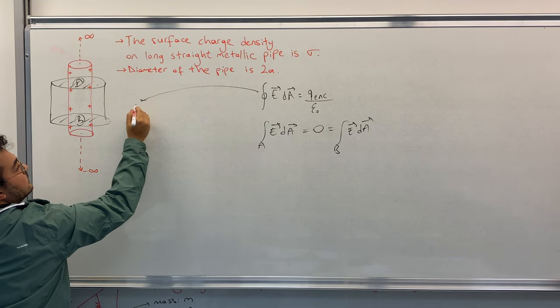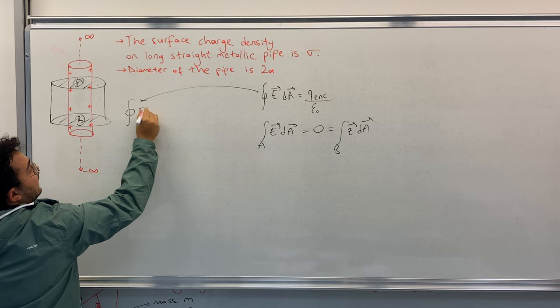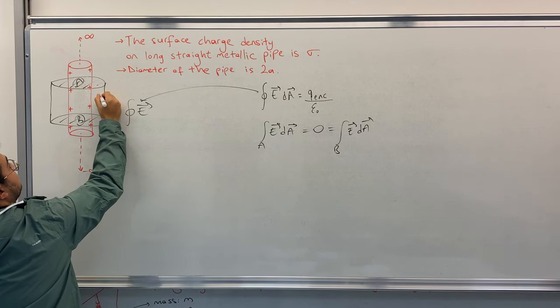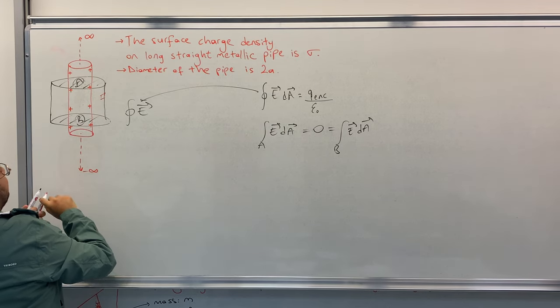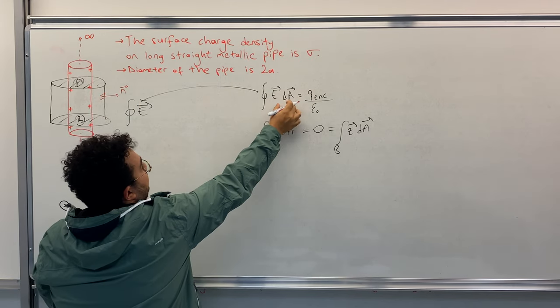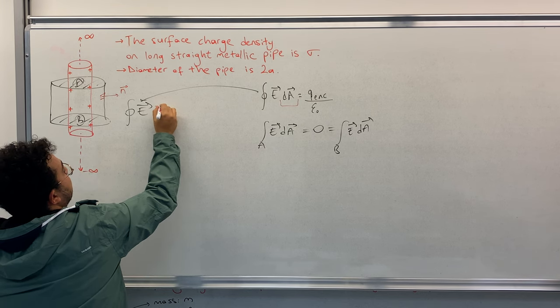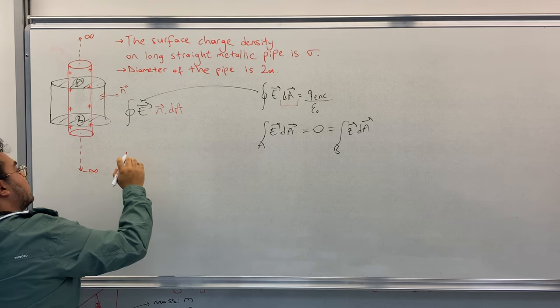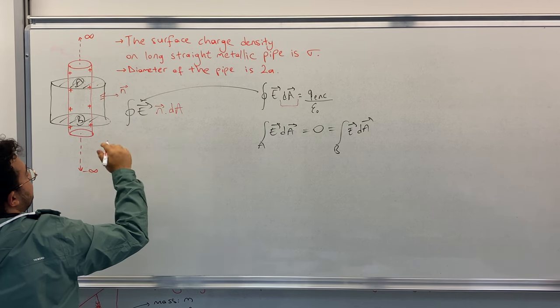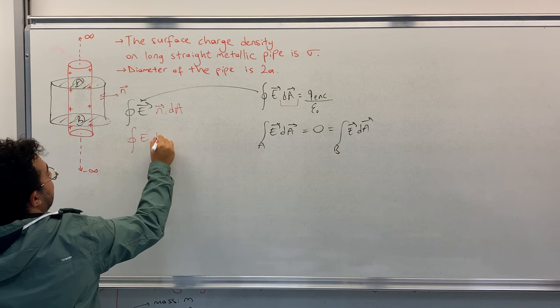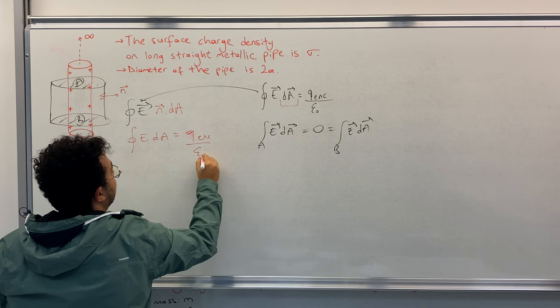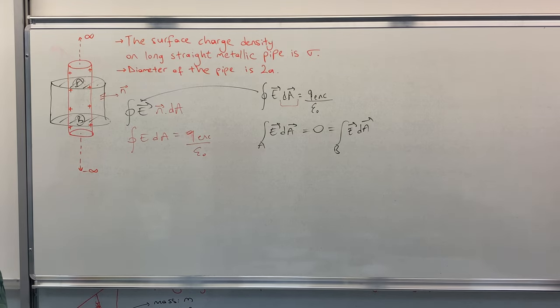Let's take this equation. Integral E, now we will take an infinitesimal area, for example this little area is the dA. We have E·dA with the normal vector, so we can open this as n·dA. Now because of the dot product, these vectors cancel each other.